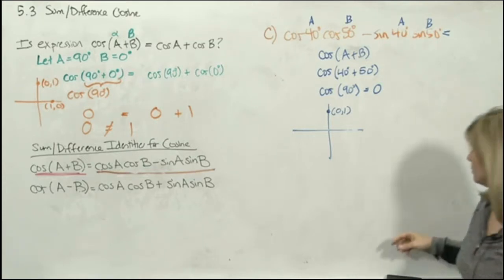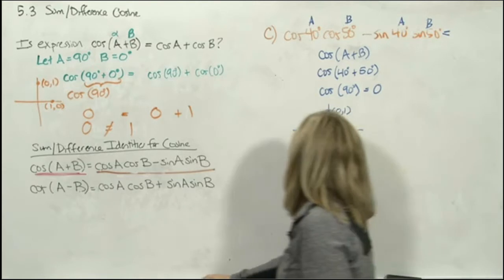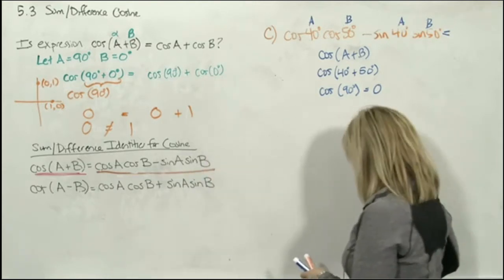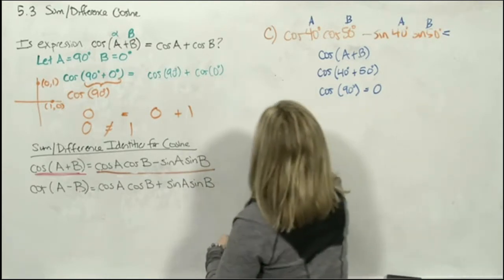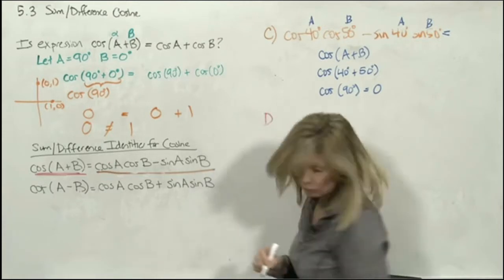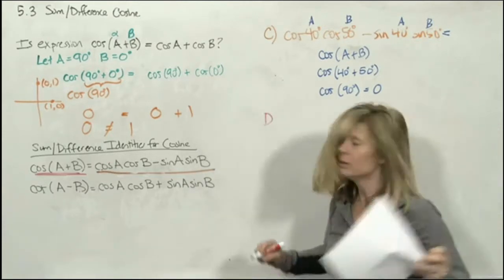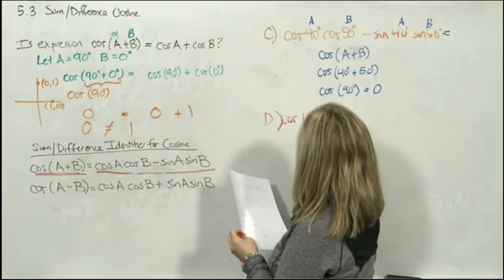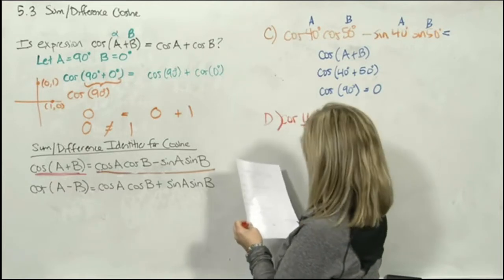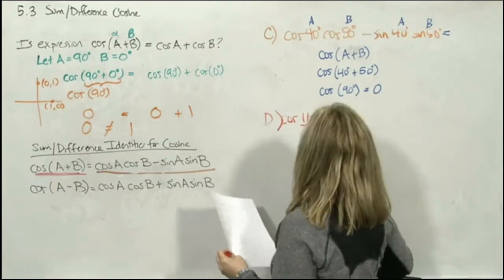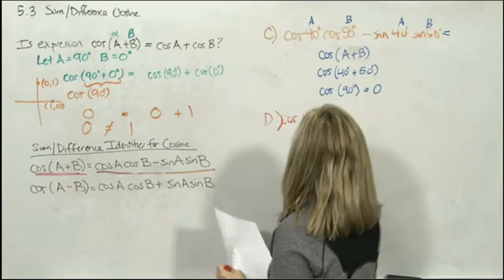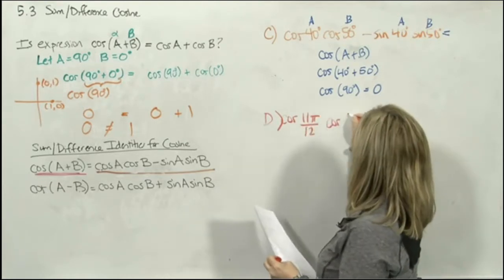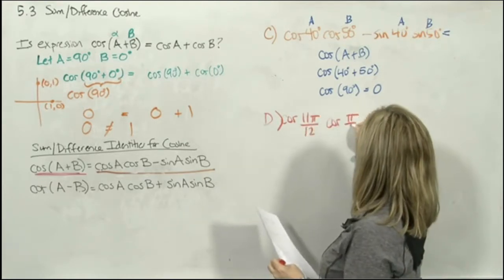Example 1D is given in radians: cosine(11π/12) · cosine(π/4) + sine(11π/12) · sine(π/4).